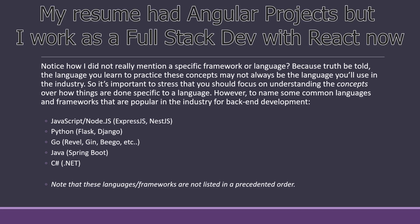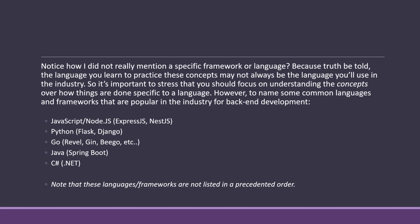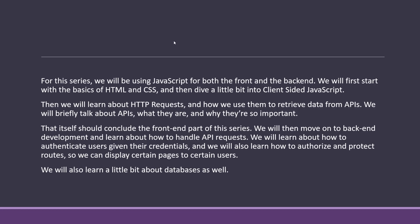Notice I didn't mention a specific framework or language. The truth is, the language you learn to practice these concepts may not always be the language you'll use in the industry, so it's important to focus on understanding the concepts over the language itself. Common backend languages and frameworks include JavaScript with Node.js using Express or Nest, Python with Flask or Django, Go with Revel or Bego, Java with Spring Boot, and C# with .NET. For this series, we'll use JavaScript for both the front and the backend. We'll start with HTML and CSS basics, then client-side JavaScript, then HTTP requests, and then retrieve data from APIs — and that will conclude the front-end part of this series.